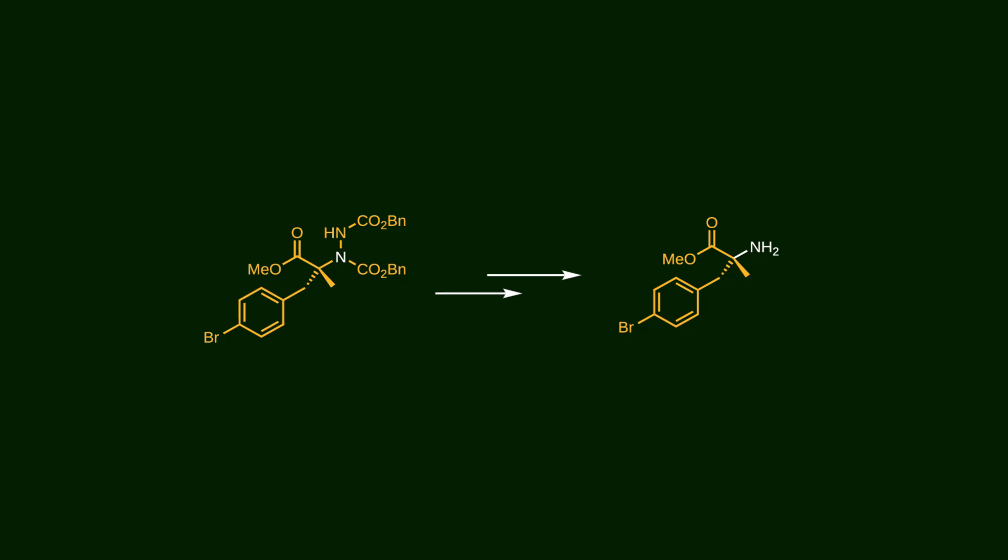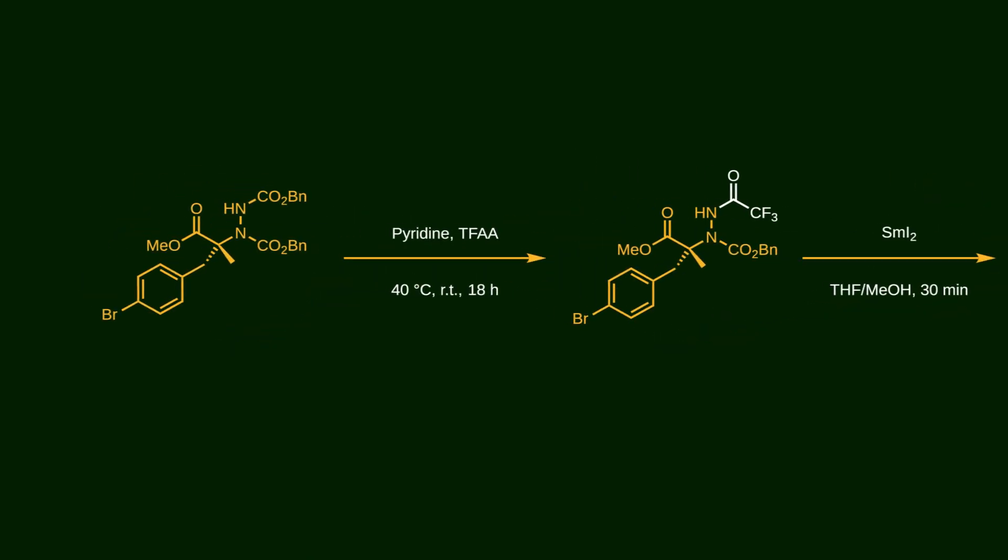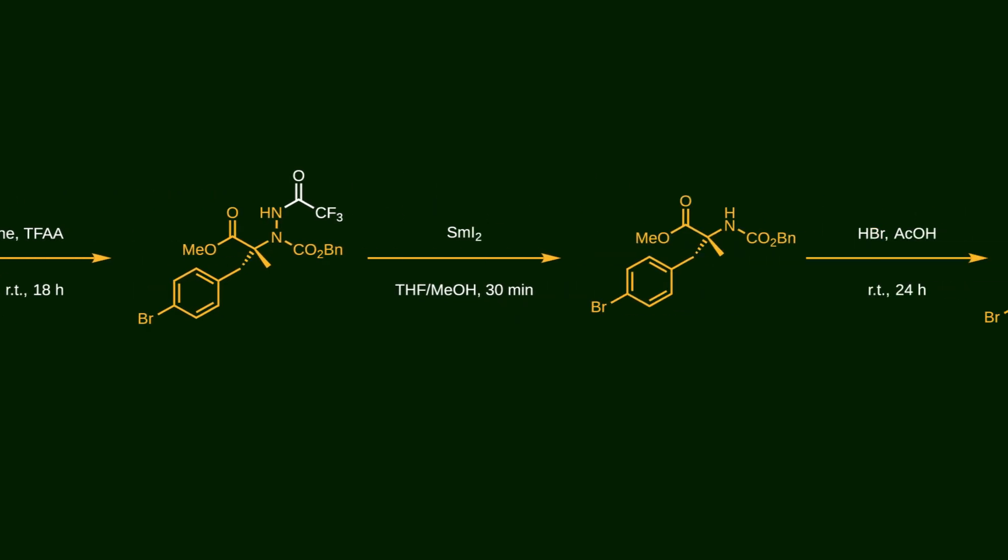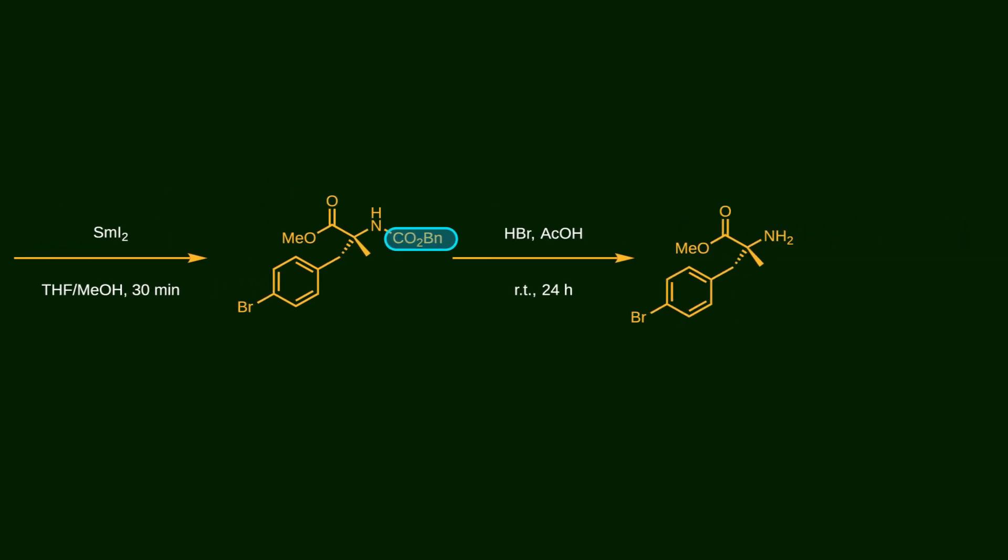During the next sequence, we're gonna cleave the nitrogen-nitrogen and carbon-nitrogen bonds to create an unprotected primary amine. This process begins with trifluoroacetylation of this nitrogen atom which is more reactive than the other nitrogen. Trifluoroacetic anhydride acts as a good electrophile for the nitrogen atom. Now the nitrogen-nitrogen bond can be selectively cleaved by samarium iodide. Next, this carboxybenzyl group leaves the molecule by treatment with HBr.